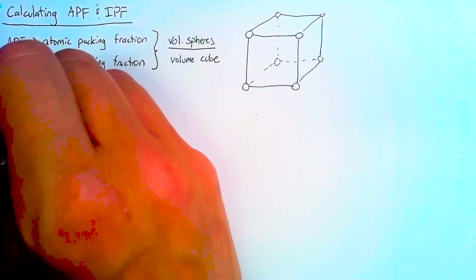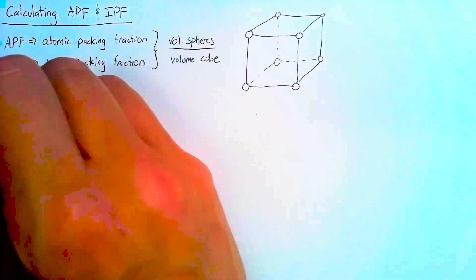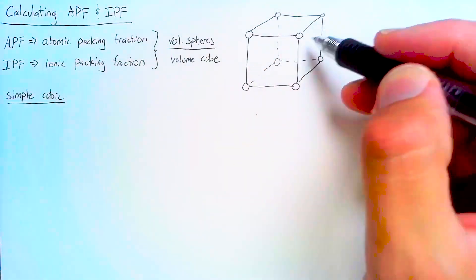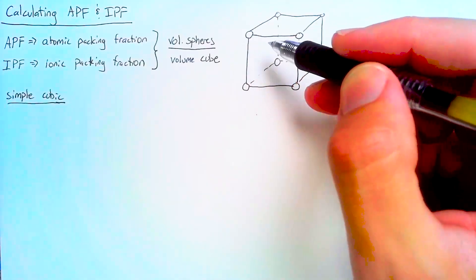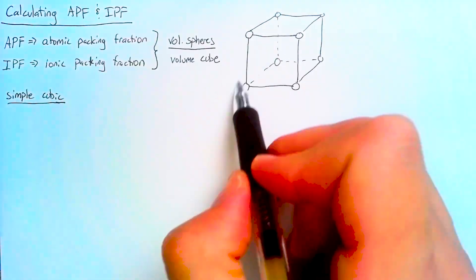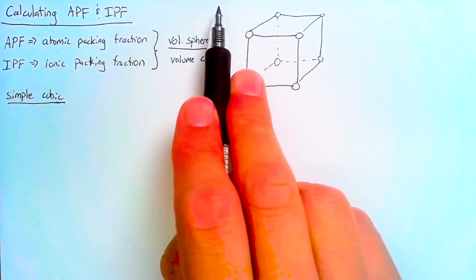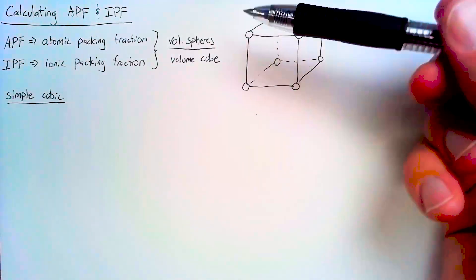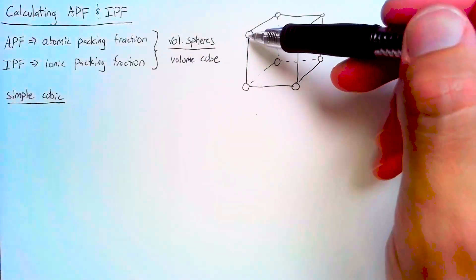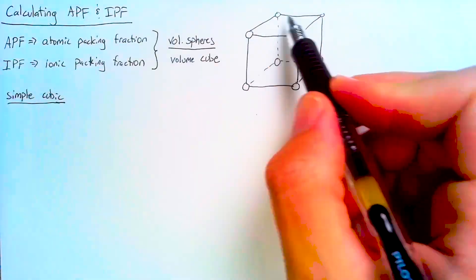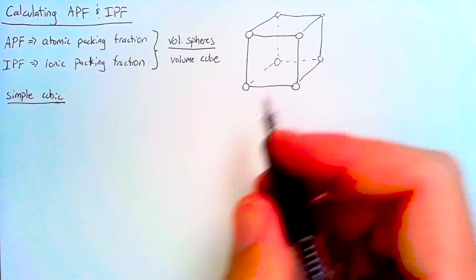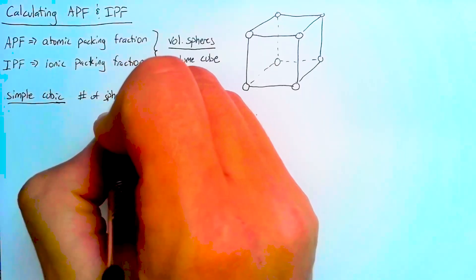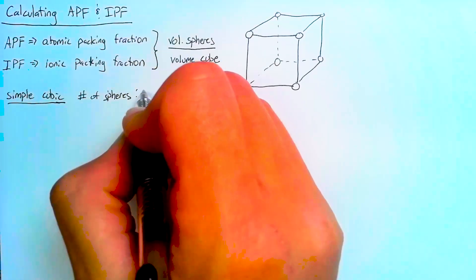In the simple cubic case, each of these spheres on the corners is only going to have one-eighth of the sphere inside — it gets cut in half by the top plane, cut in half by the left plane, and cut in half by the front plane. When we count up all eight corner spheres, the total number of spheres we end up with is one.